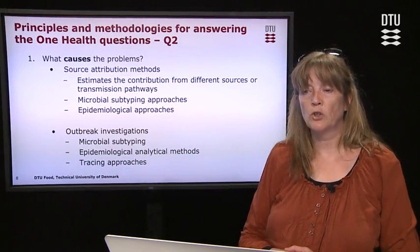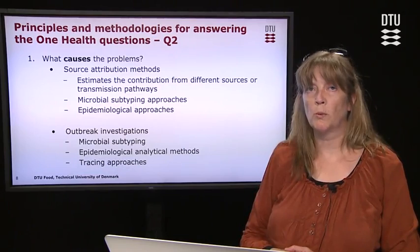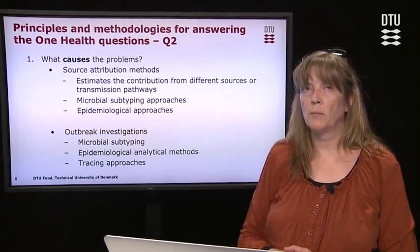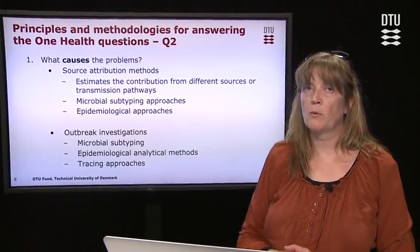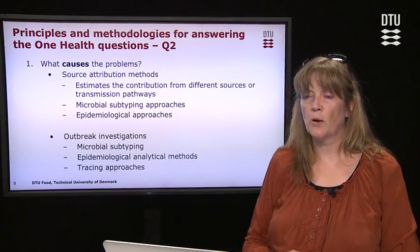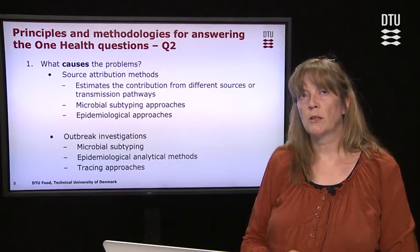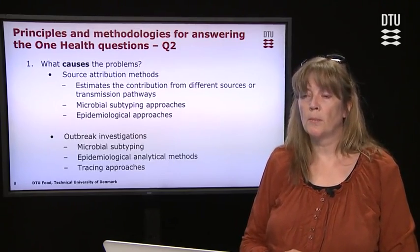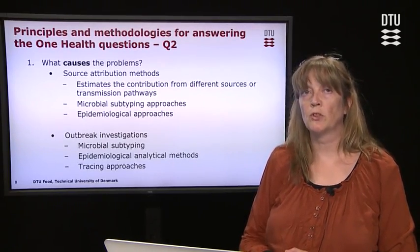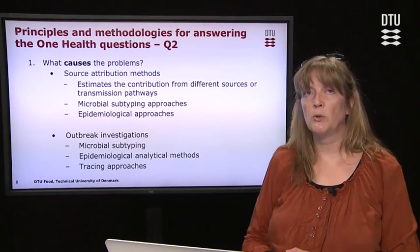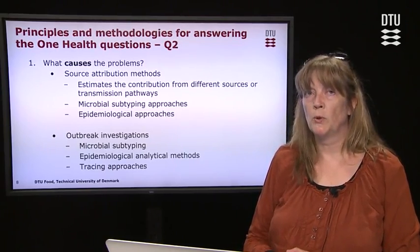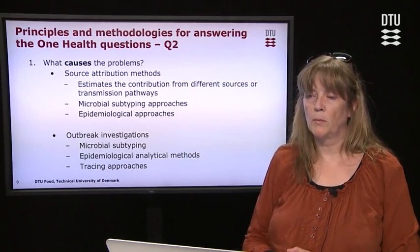Next is question two: what causes the problem? Here we often divide methods into those that address sporadic cases — cases in the general population not linked to outbreaks — and those linked to foodborne outbreaks. Source attribution methods are applied to the general population and estimate the contribution from different sources and transmission pathways. We use a mixture of microbial subtyping approaches and epidemiological approaches, and you will learn about them further on this week.